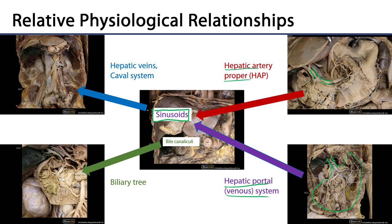Separate from all of this are bile canaliculi — tiny little bile canals which coalesce into ducts forming the proximate portions of the biliary tree or biliary tract. That biliary tract conducts bile from the liver to and from the gallbladder, down to the major duodenal papilla. It coalesces with the main pancreatic duct into the hepatopancreatic ampulla, which then secretes through the major duodenal papilla into the second part of the duodenum. This papilla and these secretions represent the division between the foregut and the midgut.